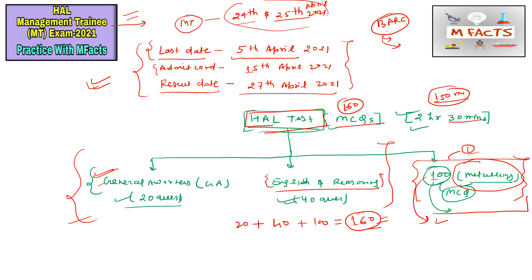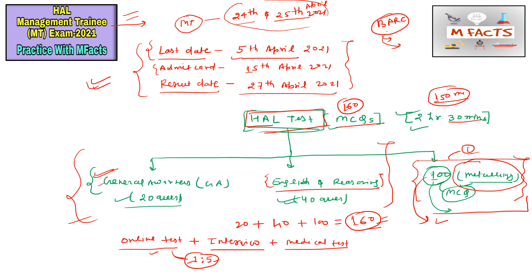After the online test, which is the first step, if you are shortlisted you will be eligible for the next step — the interview. The ratio for interview shortlisting is 1:5, meaning for one seat they will call five candidates. The last stage is medical examination. So this is a three-step process: online test, then interview, then medical test, which will finish by May or June 2021.